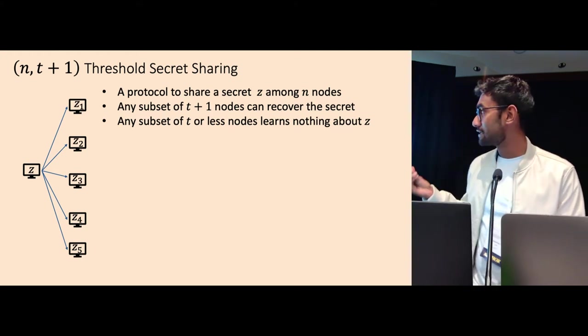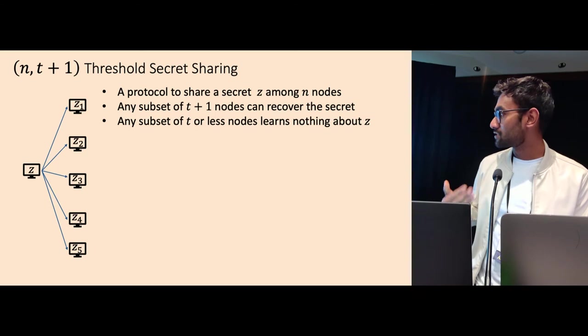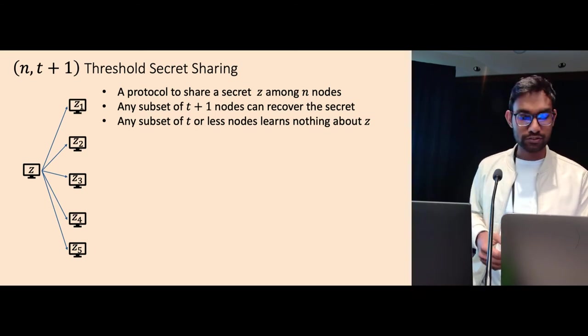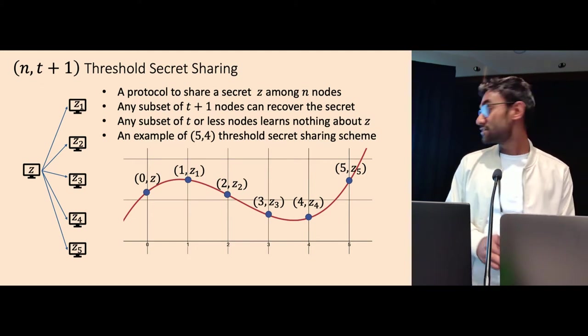So, pictorially, this is what it looks like. We have a dealer that has a secret Z, and then it wants to share a secret, so that everybody outputs a share Z1, Z2, Z3, Z5. So one of the classic examples of threshold secret sharing is the Shamir secret sharing.